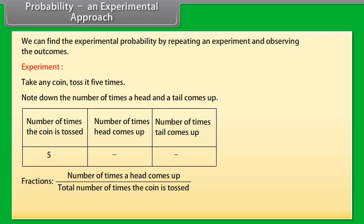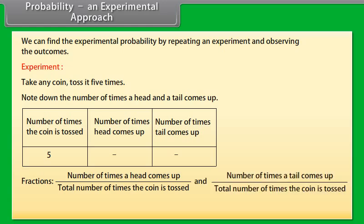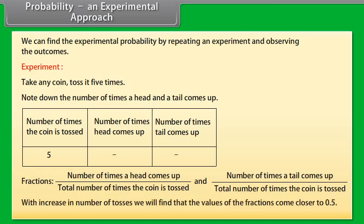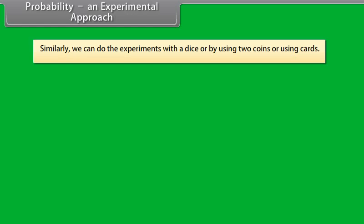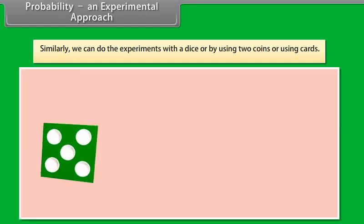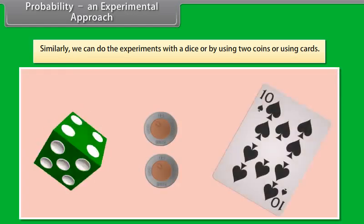First one is number of times a head comes up upon total number of times the coin is tossed. And the second one is number of times a tail comes up upon total number of times the coin is tossed. As we increase the number of tosses, we will find that the values of the fractions come closer to 0.5. Similarly, we can do the experiments with a dice or by using two coins or using cards.